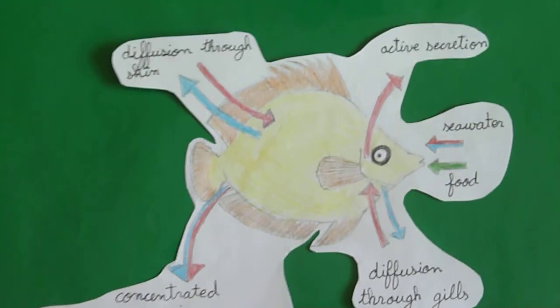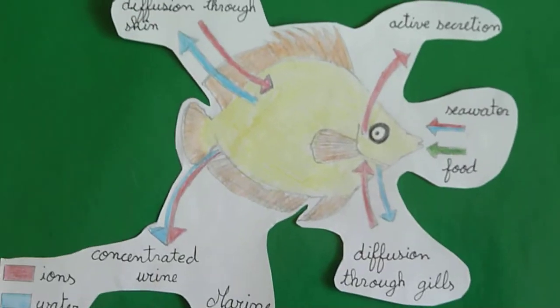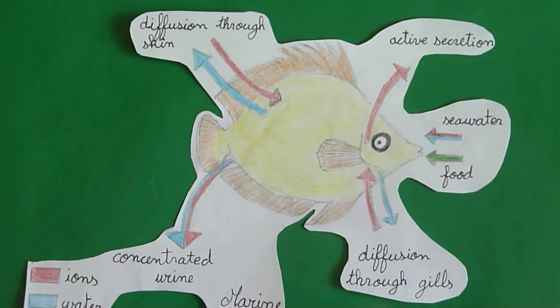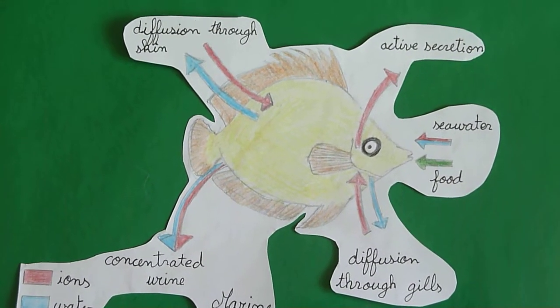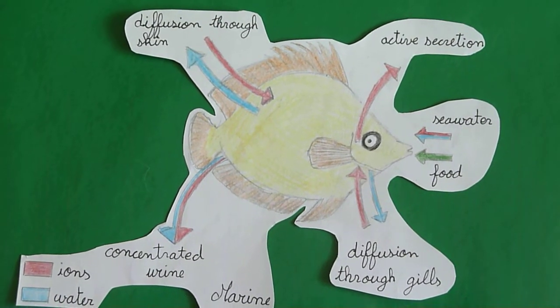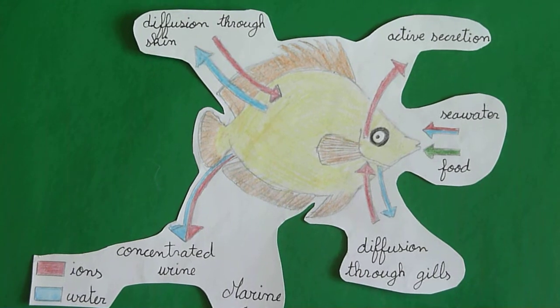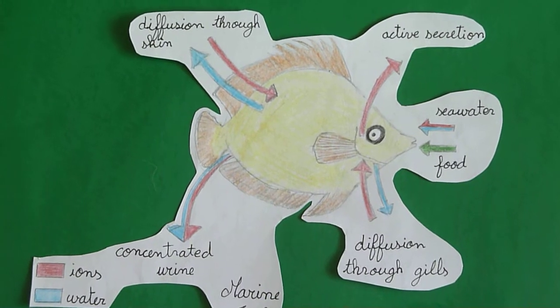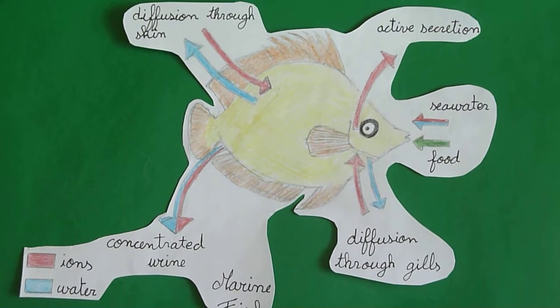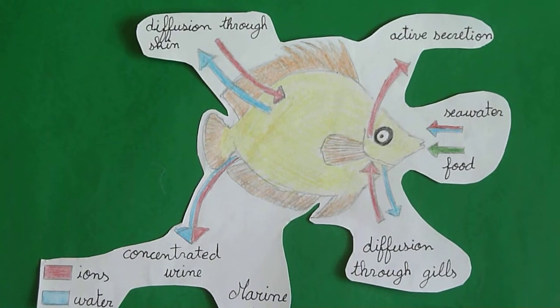So now we're going to present a little bit about different animals and how they use homeostasis and osmoregulation. In marine fish, here we have a marine fish and the different transfer of ions and water that occurs. Specialized cells in their gills excrete excess salt, so they actively secrete it through active transport. There's also a diffusion through their gills of both water and ions, and a diffusion through their skin of the ions. A way to get rid of this is the active secretion and also concentrated urine, so urine high in salt.